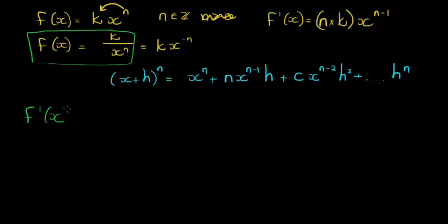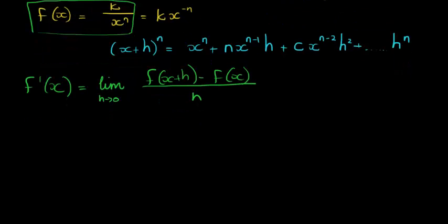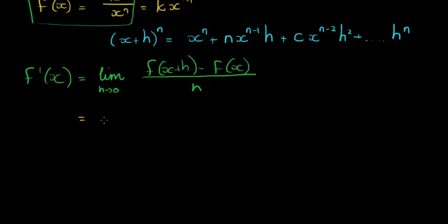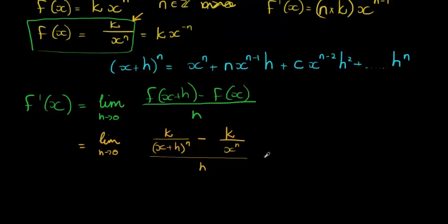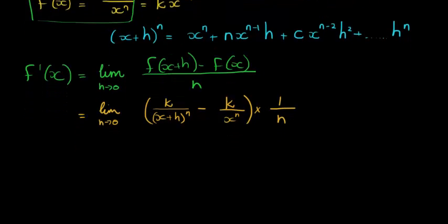We're trying to find the derivative of the quotient function. The derivative is found using first principles: the limit as h tends to zero of f(x+h) minus f(x), all over h. Substituting, f(x+h) becomes k over (x+h) to the power of n, minus k over x to the power of n, multiplied by 1 over h — to avoid having too many fractions.